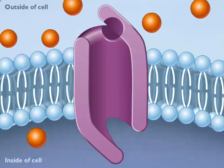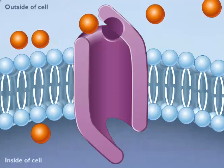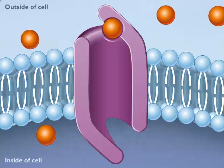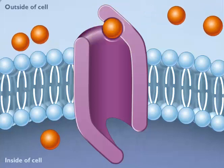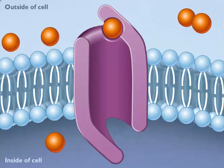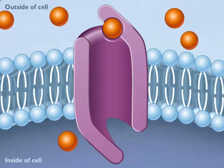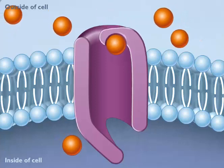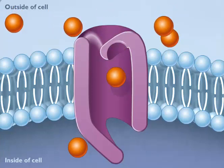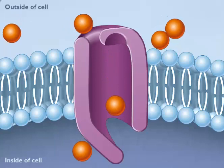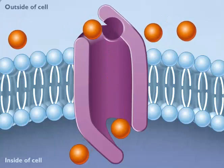These special carrier molecules that form the protein channel bind only to a specific molecule, such as a particular sugar or amino acid. Once the molecule binds to the carrier protein, this protein helps or facilitates the diffusion process by changing shape and moving the molecule down its concentration gradient through the membrane into the cell where it is released.